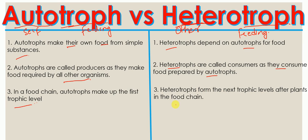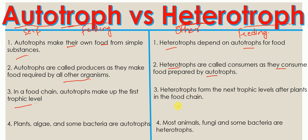The final difference is that plants, algae, and some bacteria are examples of autotrophs, whereas most animals, fungi, and some bacteria are examples of heterotrophs. Thank you.